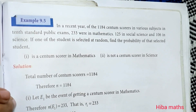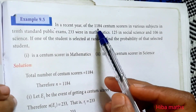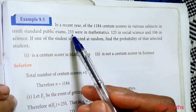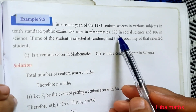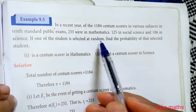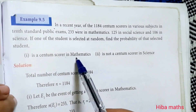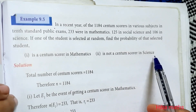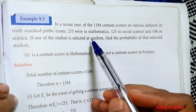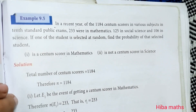Hello students, welcome to Hibamax 9th Standard Maths, Chapter 9, Example 9.5. In a recent year, out of 1184 Centum Scorers in various subjects in the 10th standard public exam, 233 were in Mathematics, 125 in Social Science, and 106 in Science. If one student is selected at random, find the probability that the selected student is a Centum Scorer in Maths, or is not a Centum Scorer in Science. The total 1184 Centum Scorers are across various subjects.